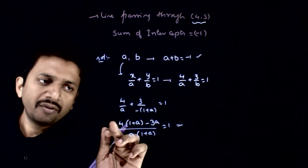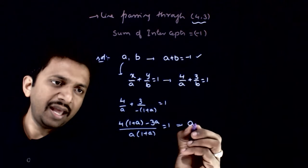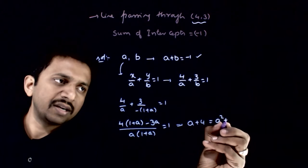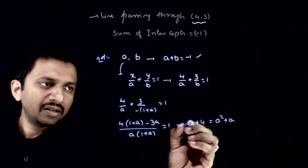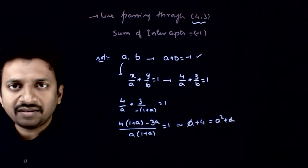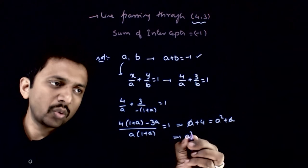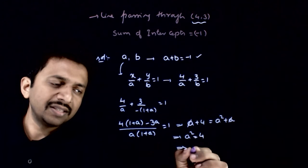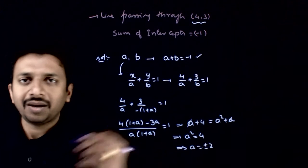This implies 4a minus 3a, a plus 4 is equal to a square plus a. This a and this a get cancelled. This implies a square is equal to 4. This implies a is equal to plus or minus 2.